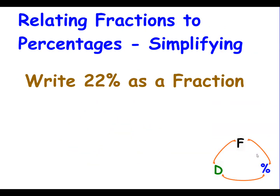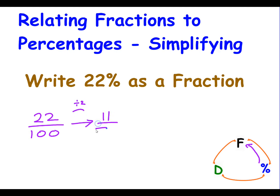To go the other way — from a percentage to a fraction — 22% is 22 over 100. However, remember from your fractions lesson that whenever you create a fraction you should always check if it can simplify. I can see that 2 divides into both the numerator and denominator, so dividing both by 2 gives 11 over 50. 11 is a prime number and doesn't go into 50, so I can stop simplifying. So 22% is the same as the fraction 11 over 50.